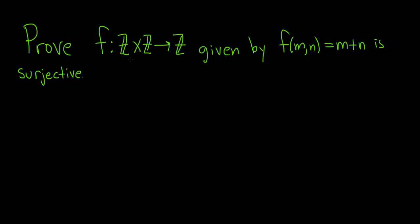In this problem we're going to prove that this function from Z cross Z into Z given by f of mn equals m plus n is surjective.